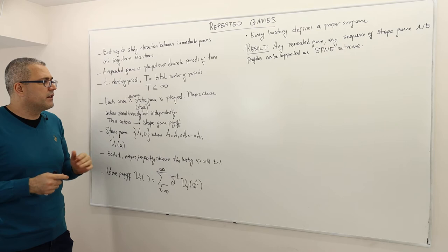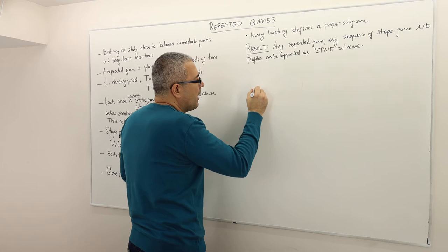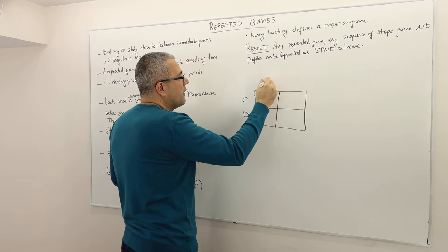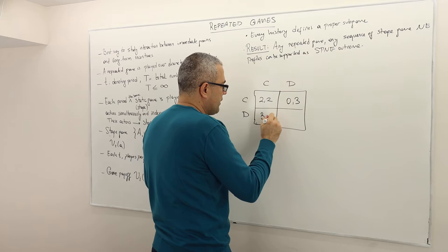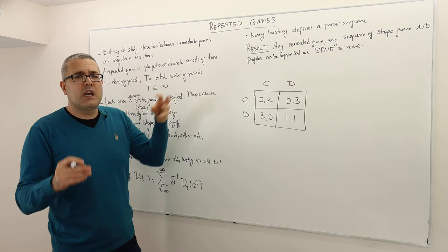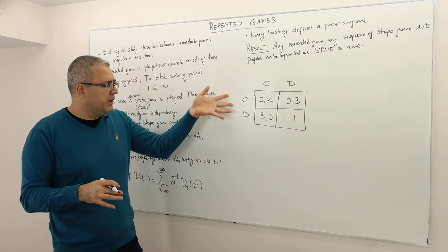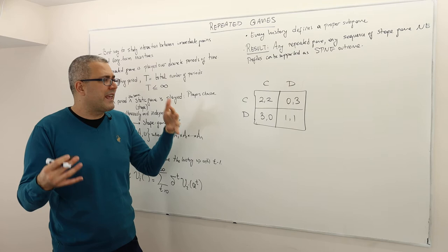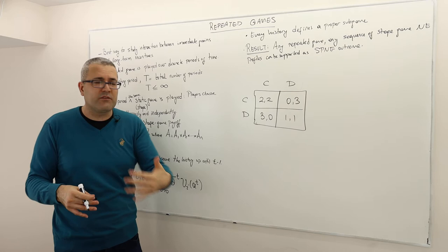Each period, players choose actions simultaneously and independently. Imagine the players play the prisoner's dilemma game with payoffs: (C,C)→(2,2), (C,D)→(0,3), (D,C)→(3,0), (D,D)→(1,1). So in period zero, both player one and two simultaneously choose one of two actions, C or D. Once this period is over, they learn their actions, and then the same matrix game is played in period one, period two, et cetera. The game at every stage involves the same actions.